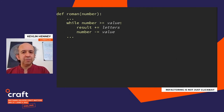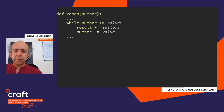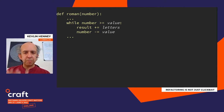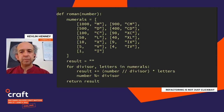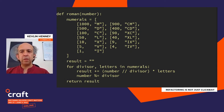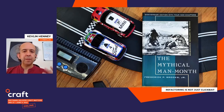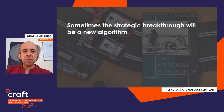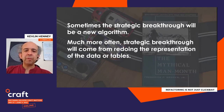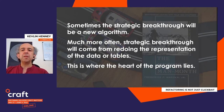This is not a control flow problem — people often approach it as one. So here's the refactoring: I've basically converted this into a table. It's a data-driven problem. Show me the data. The control flow is actually really rather boring — we just have a driver for that. But this is not a new observation. Fred Brooks said: 'Representation is the essence of programming.' Sometimes the strategic breakthrough will be a new algorithm, but much more often it will come from redoing the representation of the data or tables. This is where the heart of the program lies.